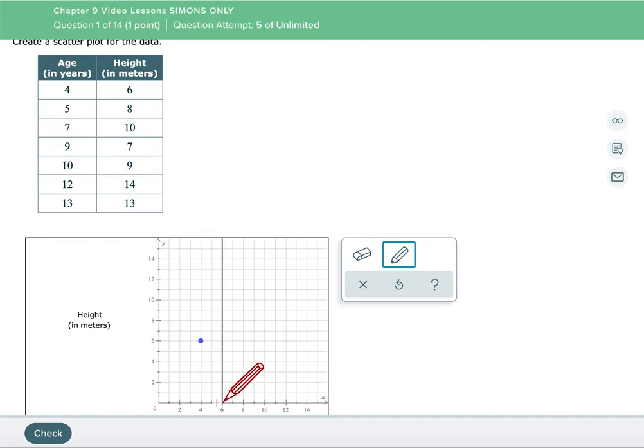Seven ten, so seven years ten meters. So go to seven years, that's right here, and go up to ten, put your point. At nine seven, so go over to nine then go up to seven, put a point.